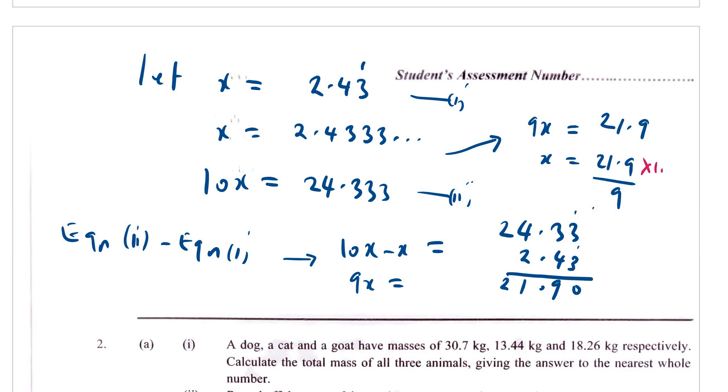Now multiply by 10 both sides. You have x equals 219 divided by 90. We have to simplify. Divide by 3 here, you get 73. Divide by 3 here, you get 30. When you divide, you get 2 and 13/30. So that is how we were supposed to solve question number 1.